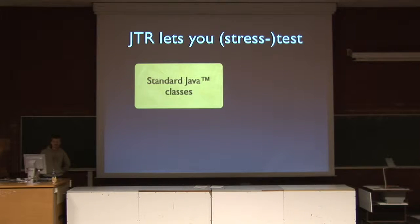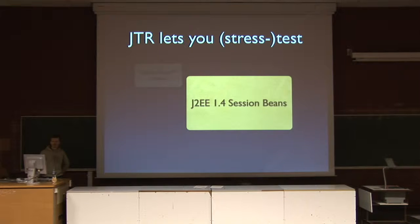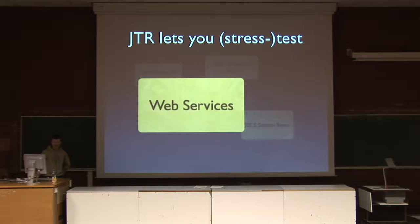The first thing we can do is obviously testing standard Java classes, by which I mean plain Java objects, the traditional POJOs. Things like this can also be accomplished by means of other testing tools, for example JUnit. But it is also possible using some features really useful for testing stateful and stateless session beans, both adhering to the J2EE 1.4 specification and the EJB 3 specification. All the tricks that are necessary for distinguishing between the two specifications are all handled by the JTR runtime framework transparently to the test developer.